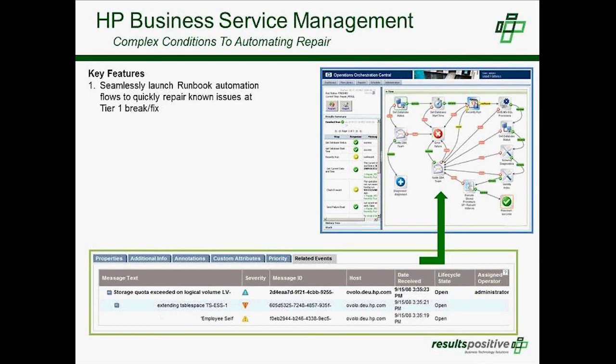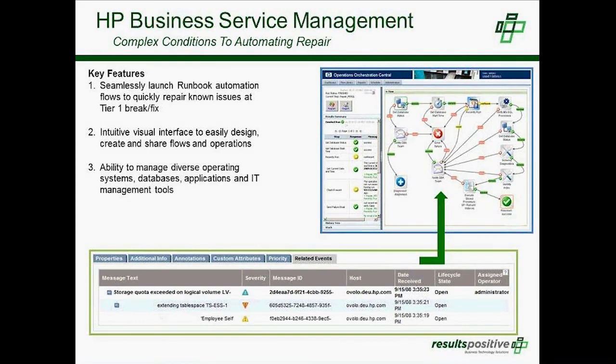For known issues — for example, a service going down or a process causing CPU utilization spikes — those workflows can be just one click away from resolving the event. It can also be used for well-known troubleshooting steps for Level 1 NOC staff who are not SMEs for the application, but can still run those workflows to provide information before the incident is escalated to Level 2 or Level 3.